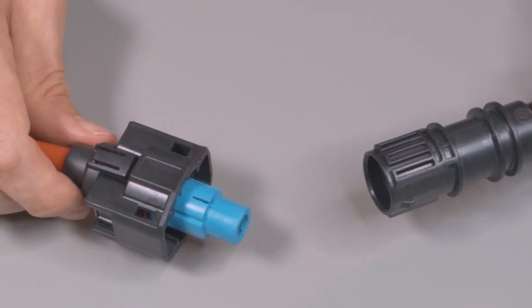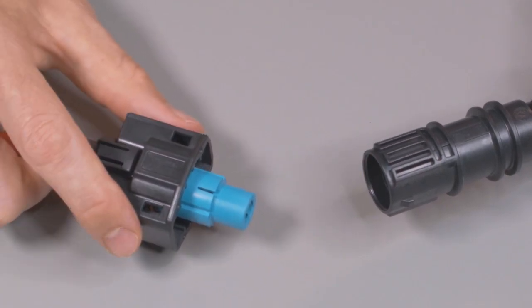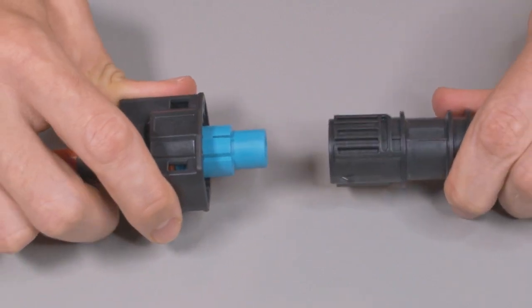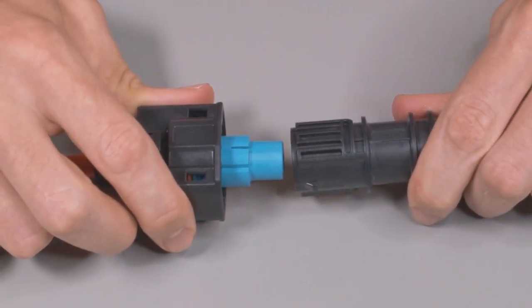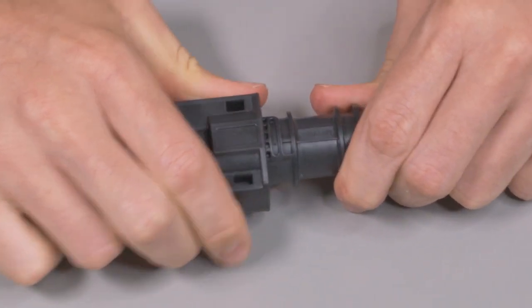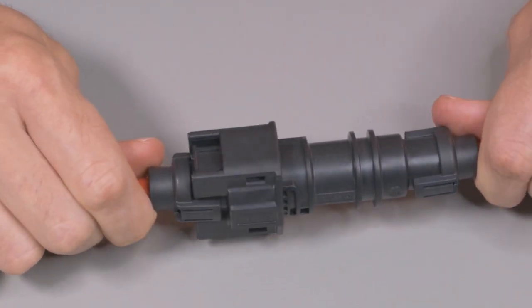DTSK connectors are designed to be mated and unmated by hand. When mating DTSK connectors, grasp the connector by the body and align the keys on the plug and the receptacle. Push the plug and receptacle together until you hear a click and the exterior locking latches are seated in place.